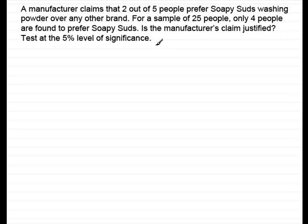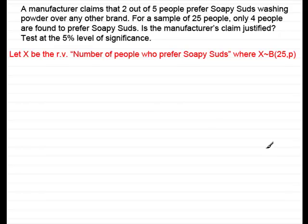If we assume that the proportion of people who prefer Soapy Suds stays at 2 out of 5 — 2 fifths in other words — and that probabilities remain independent, then what we've got here is a binomial model. We can describe that by way of a random variable. Let x be the random variable: number of people who prefer Soapy Suds, where x is binomially distributed, number of trials is 25, and the probability of someone preferring Soapy Suds is P.